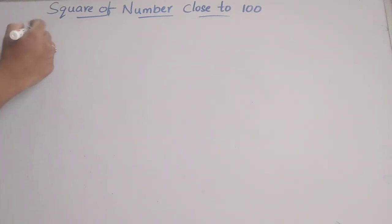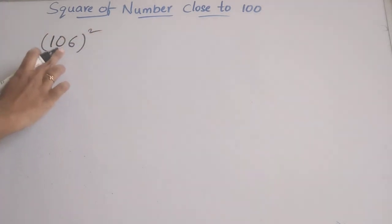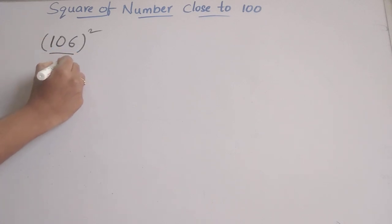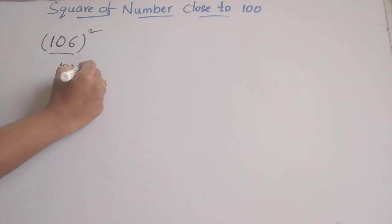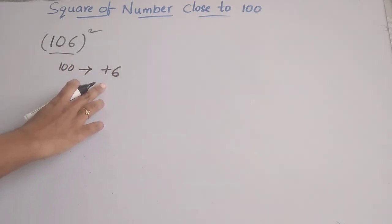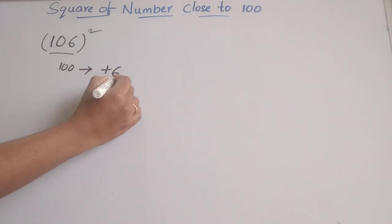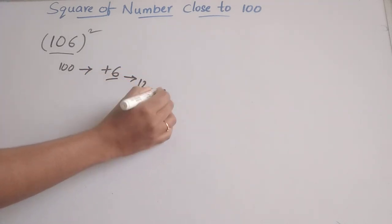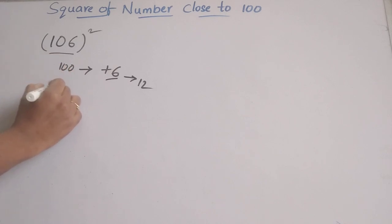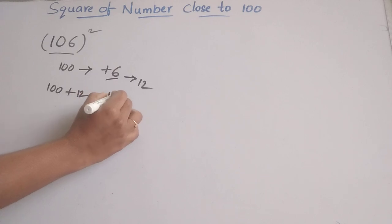Now let's take one example: finding the square of 106. For this, we compare 106 with 100. What is the difference? That is plus 6. Now we double the 6 — the double of 6 is 12. To 100, we add 12, giving us 112.